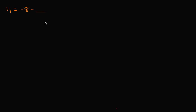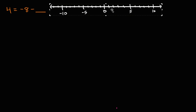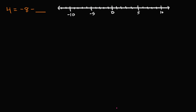So now let's work through it together. To help us, I will get a number line. So there's a number line right over there. One way to think about it is, I want to start at negative eight. I want to do something to negative eight to end up at four.